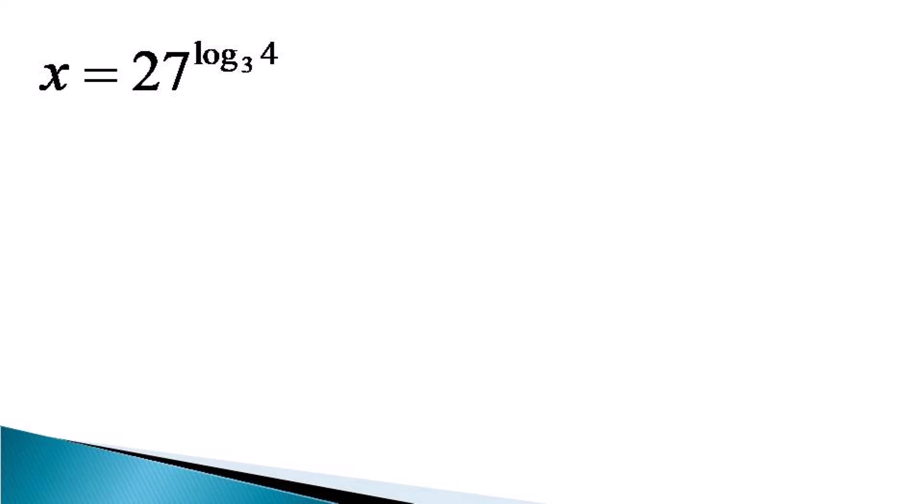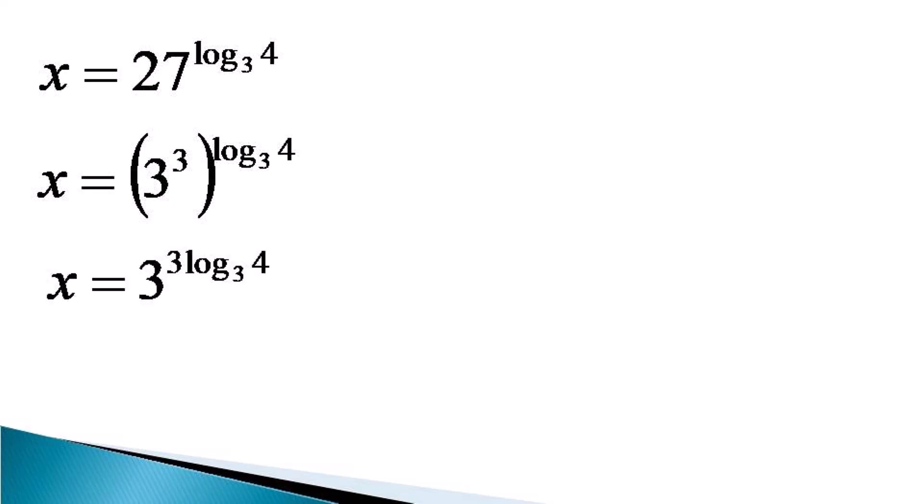On the right hand side, we express 27 as 3 cubed to get x is equal to 3 cubed raised to the power log of 4 to the base 3. The indices get multiplied to get x is equal to 3 raised to the power 3 log 4 to the base 3.